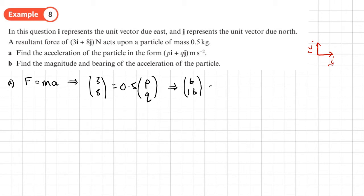And there we go, we have our acceleration: acceleration is equal to 6i plus 16j meters per second squared. Nice and straightforward.